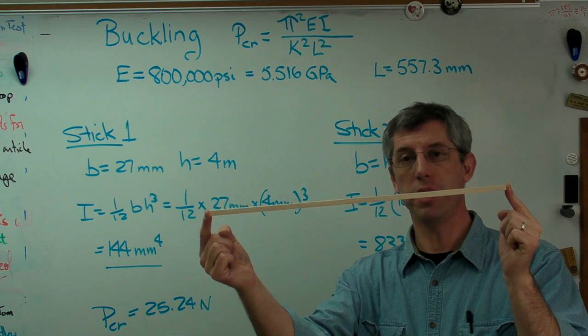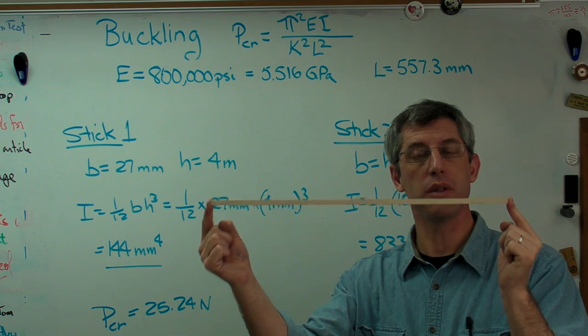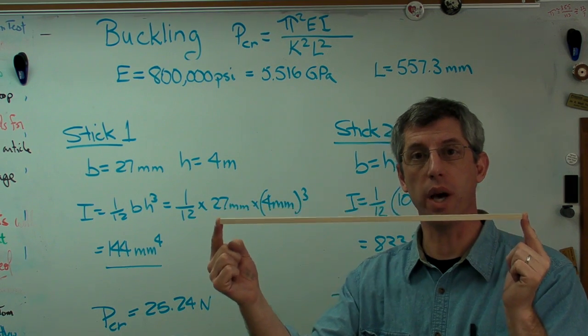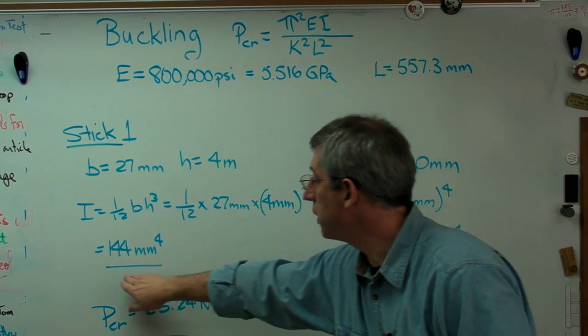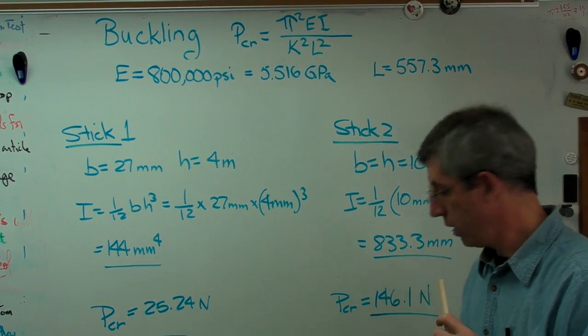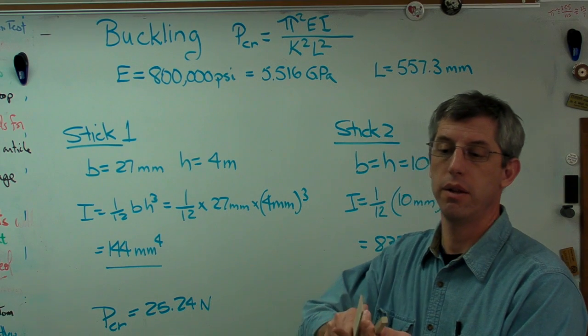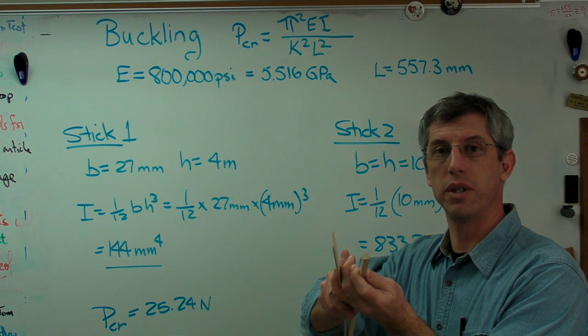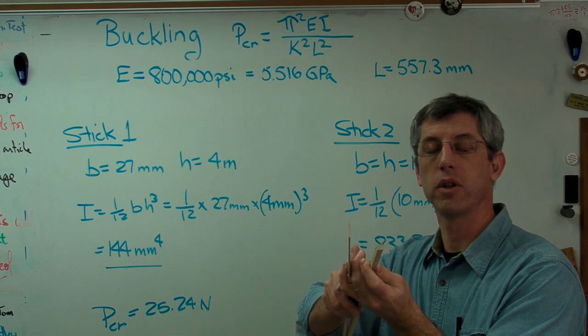So, here you go. Much, much higher buckling load, same cross-sectional area, same weight. The difference is due to the differences in I caused by the differences in cross-sectional shape.